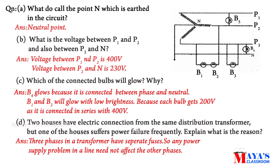First question: A figure is given showing a star connection with three phases P1, P2, and P3. P1 is the first phase, P2 the second, P3 the third. There are five bulbs connected: B1, B2, B3, B4, and B5.